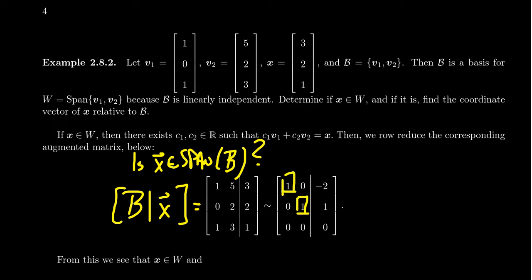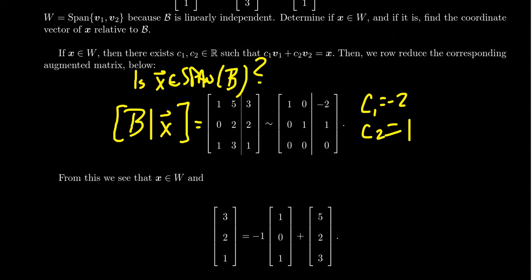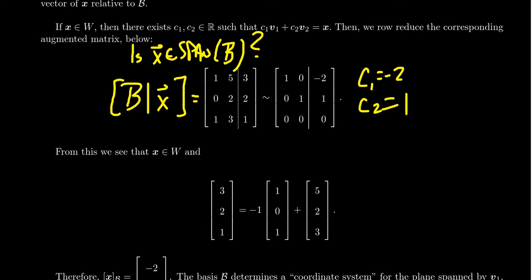And then we're going to augment it with the vector we're trying to figure out is in the span or not. And so if you solve this by row reductions, doing the usual row operations, I'm not going to worry about the details of that. You'll find the following. You have these two pivot positions. You get a row of zeros, which is perfectly hunky-dory. You get that in this situation, C1 is going to equal negative 2, and C2 is going to equal 1. And so therefore, we can verify that fact.